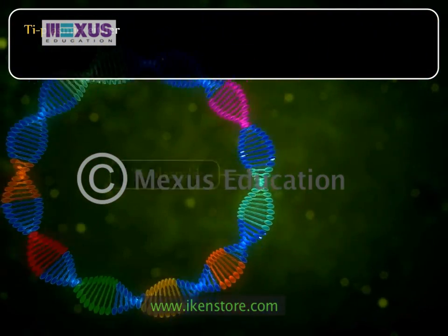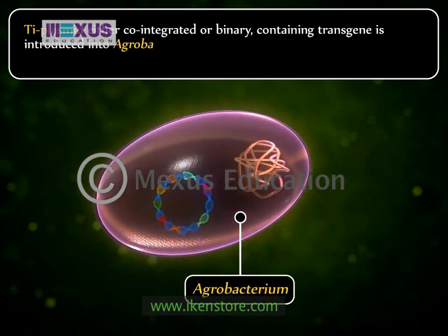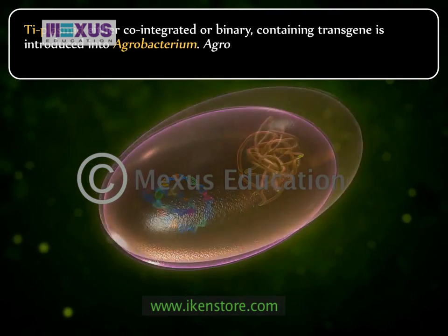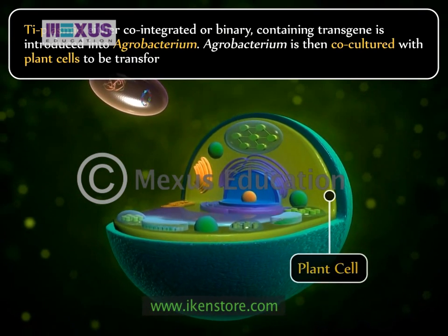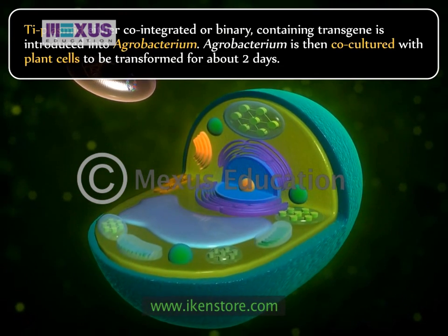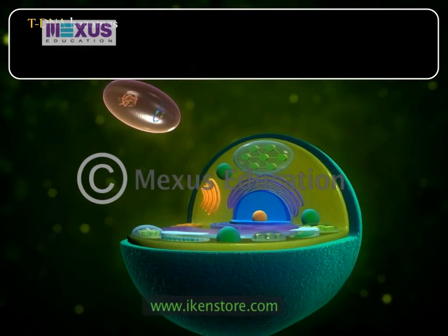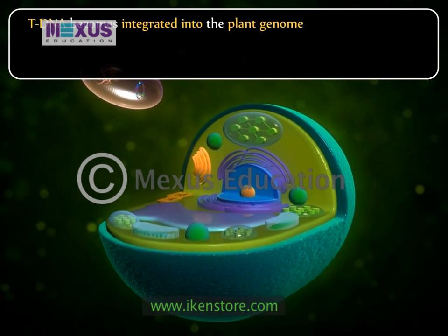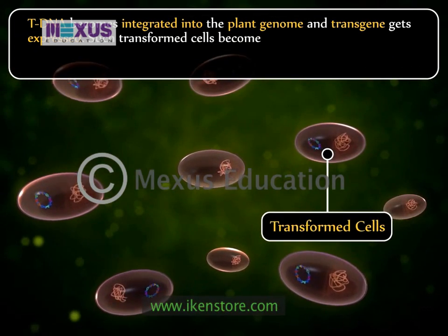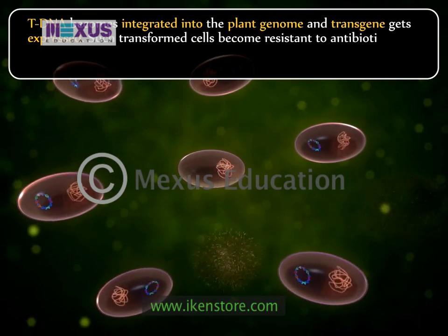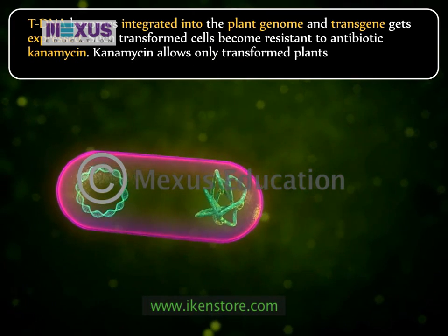The Ti plasmid, either co-integrated or binary, containing the transgene, is introduced into Agrobacterium. Agrobacterium is then co-cultured with plant cells to be transformed for about two days. During this time, the T-DNA becomes integrated into the plant genome and the transgene gets expressed. Such transformed cells become resistant to the antibiotic kanamycin, which allows only transformed plant cells to divide.